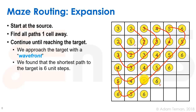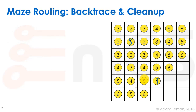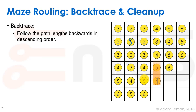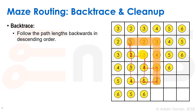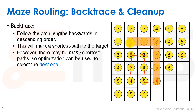We found we can reach the target in six steps. Now we do backtrace: we follow the path backwards in descending order. Starting at the box numbered six, we look for five, then four, three, two, one. We could have gone six-five-four-three-two-one by multiple different paths — all of those were legal shortest routes.